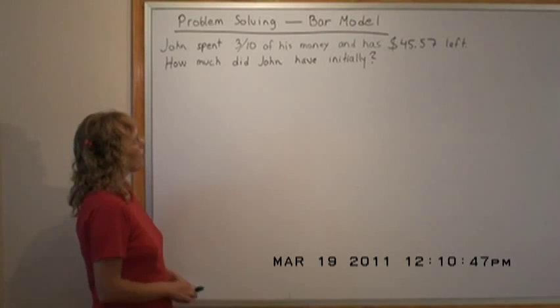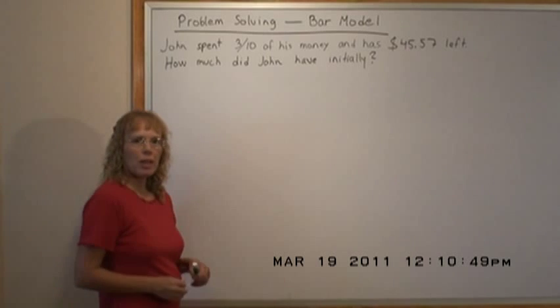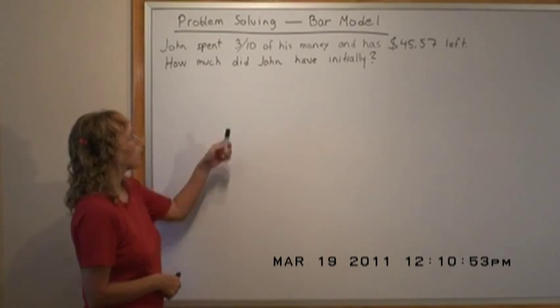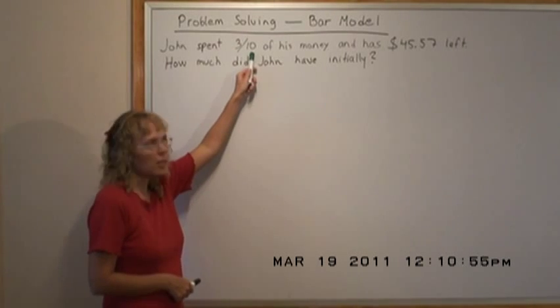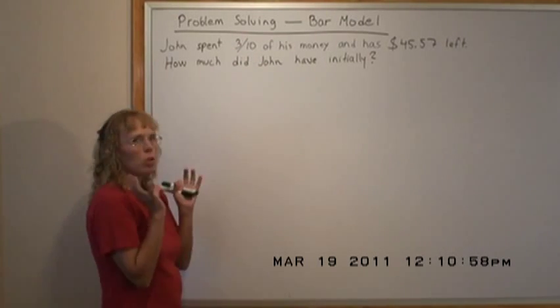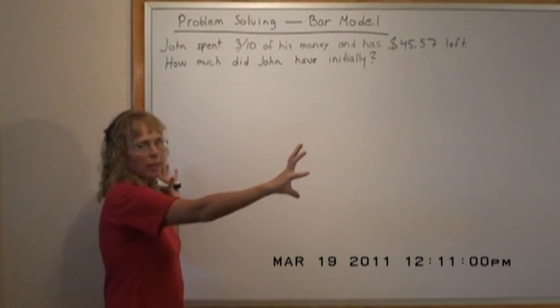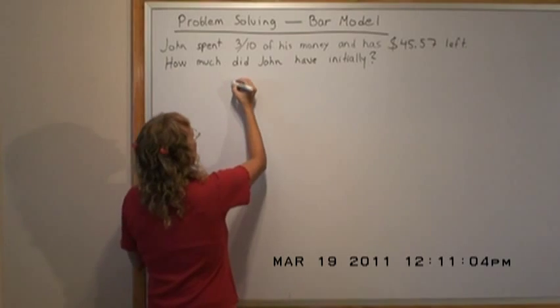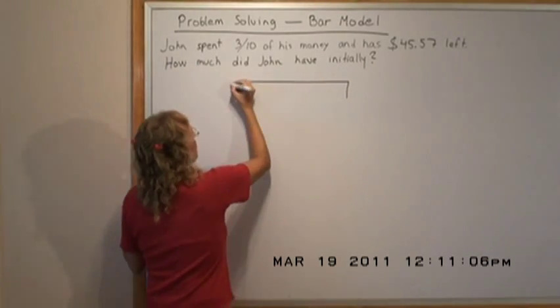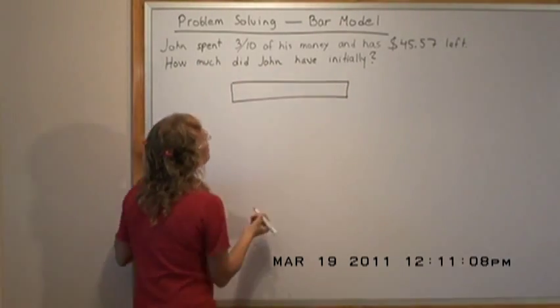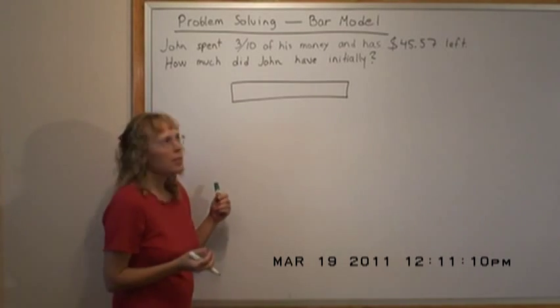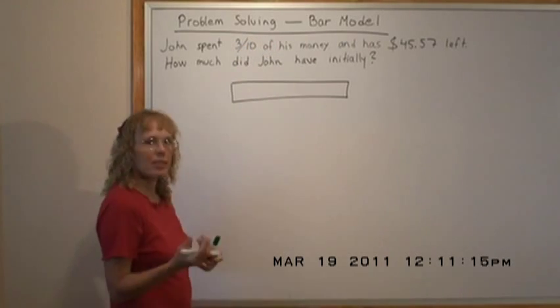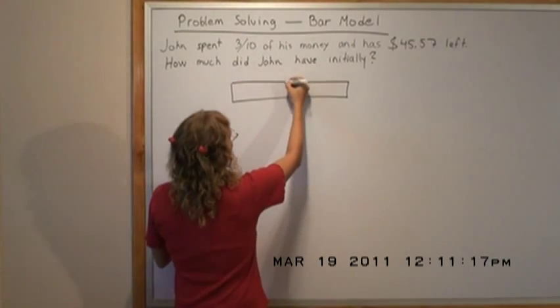The bar model helps us whenever we have a whole and parts. This problem has three-tenths, and the whole is all of John's money. We'll draw a bar to represent all of John's money and divide it into parts. Since the problem involves three-tenths, we need ten parts.